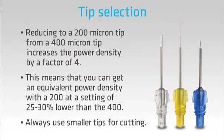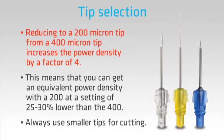Now let's think about which tip to select. Tips come in different lengths as well as in different sizes. Because of the inverse square law, changing to a 200 micron tip from a 400 micron tip halves the diameter of the laser spot and concentrates the beam, so it increases the power density by a factor of 4.